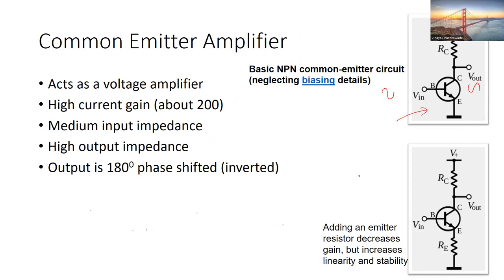There is a drawback of this basic CE circuit. To circumvent that drawback there is a modification: adding a small resistance RE from emitter to ground. This increases the linearity and stability of the circuit, which the basic CE circuit is prone to lacking. We'll see in a moment how to design both of these circuits, simulate their performance, examine the gain, DC operating points, frequency response, and other details.